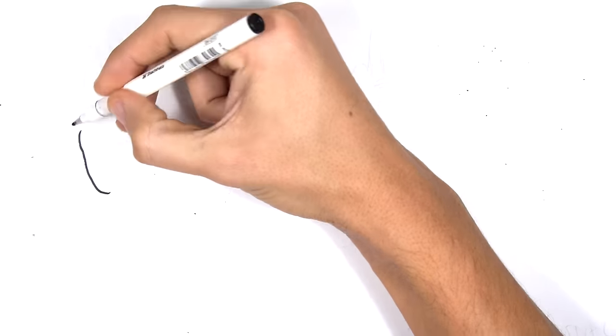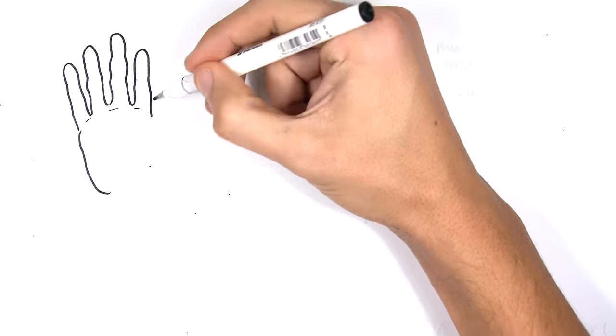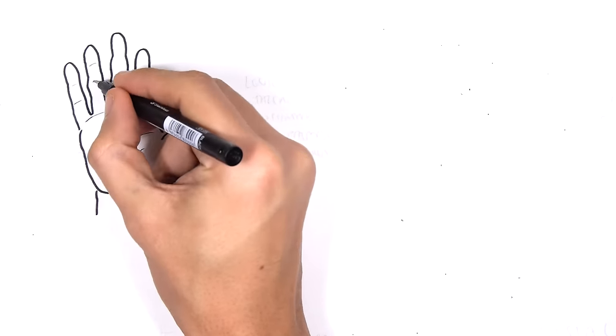Hello, in this video we're going to look at the clinical anatomy of the hand and fingers. We'll actually focus on the wrist joint mainly.